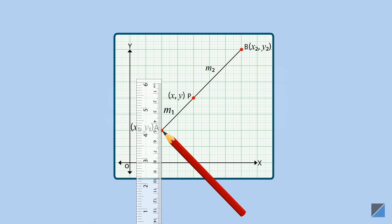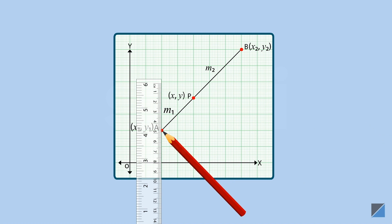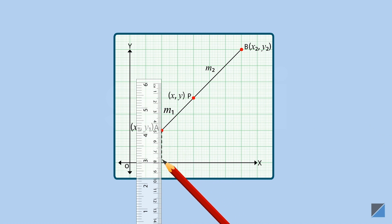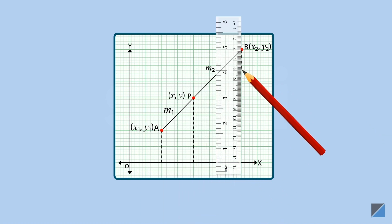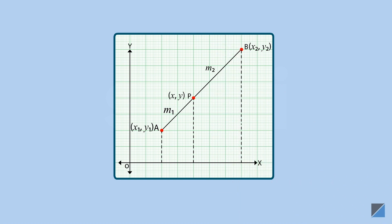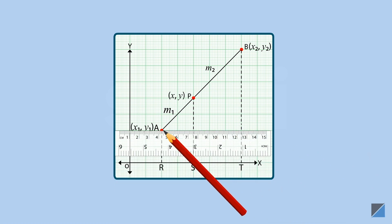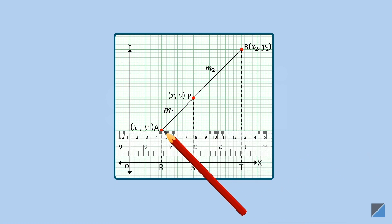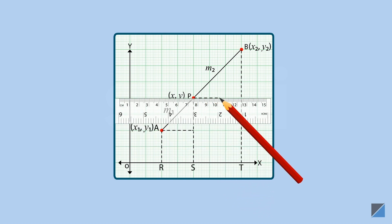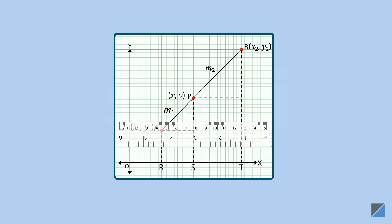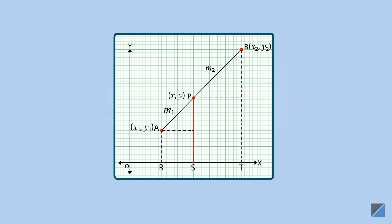We begin by drawing lines parallel to the y-axis from points A, P, and B, meeting the x-axis at points R, S, and T respectively. Then we draw lines parallel to the x-axis from points A and P such that they intersect the segment PS and the segment BT at the points Q and C respectively.